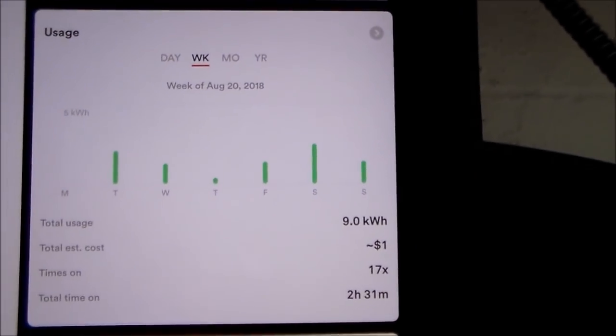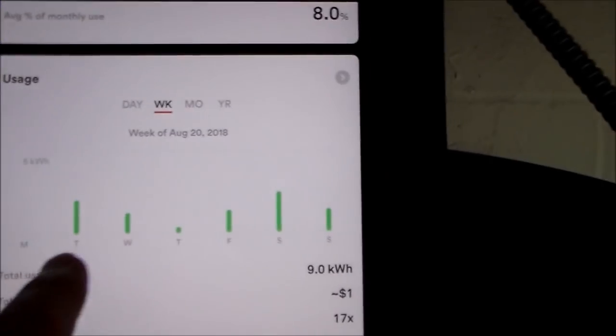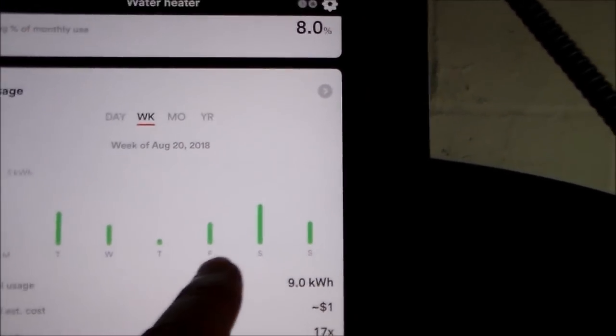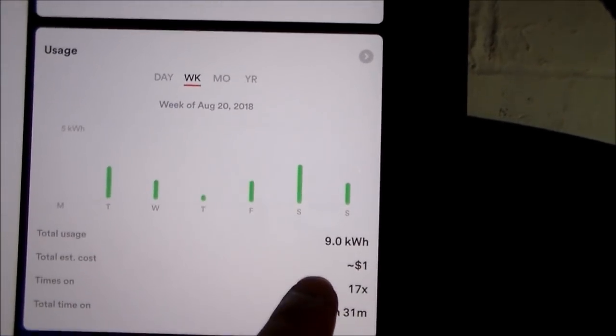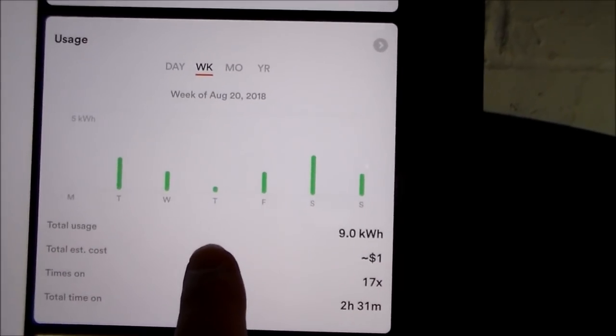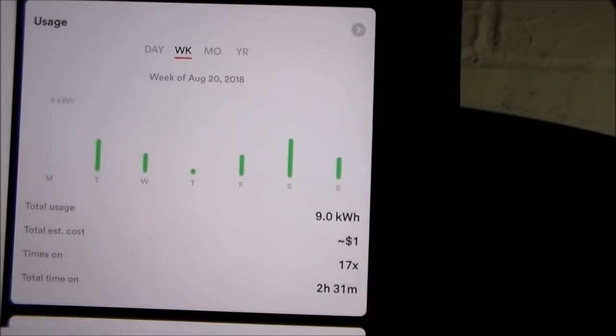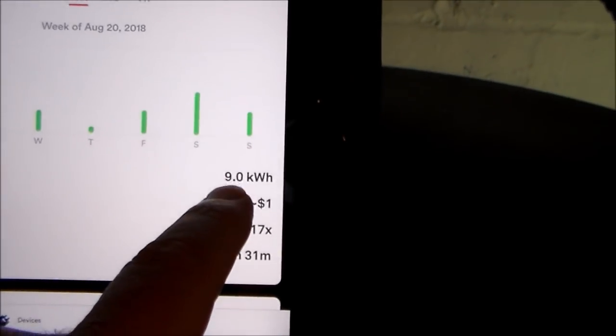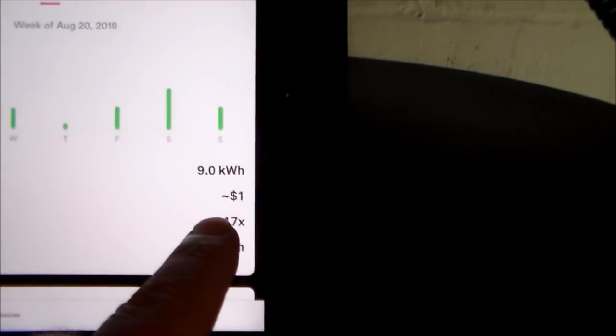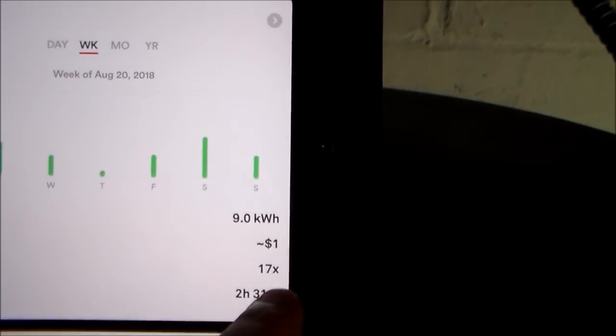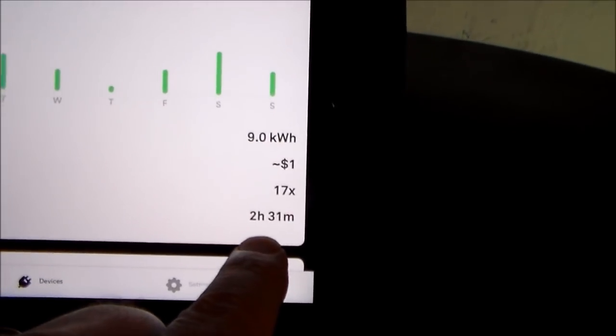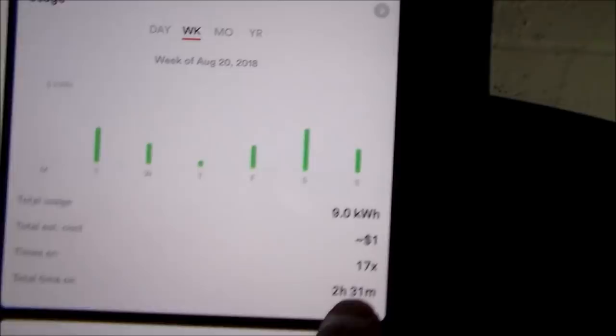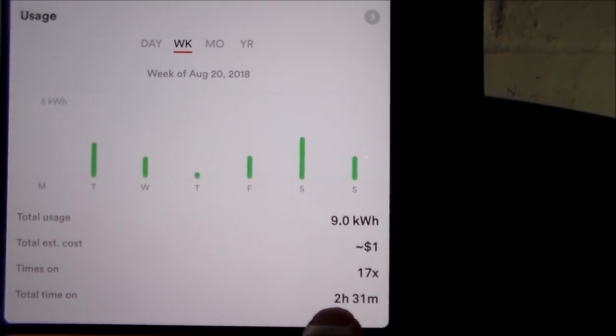I'm going to zoom in on the Sense power meter. You can see all of this is last week. Today is Sunday, so we're now in a new week. Over the last week, the AC power company-generated electricity that my tank used was a total of nine kilowatts of power, or about a dollar's worth of power at my current rate. The upper element has come on a total of 17 times and ran for a total of two hours and 31 minutes.